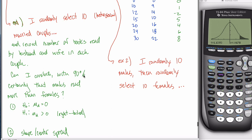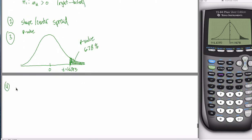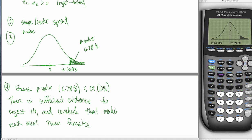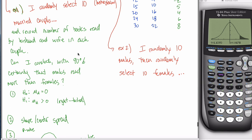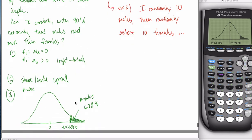I set this up at 90% certainty, so alpha is 10%. My p-value of 6.78% is less than alpha of 10%. When the p-value is less than alpha, there is sufficient evidence to reject the null hypothesis and conclude that males read more than females.